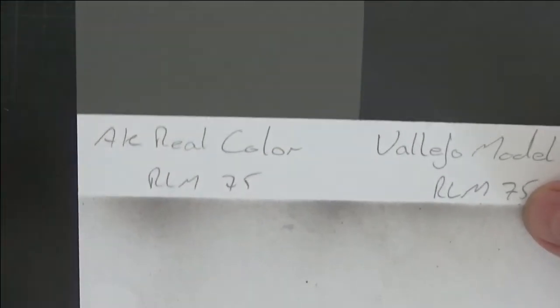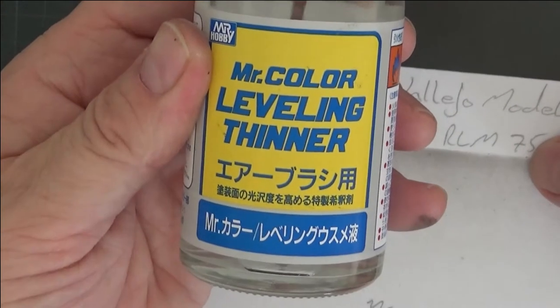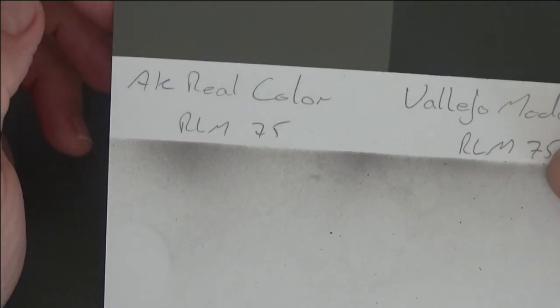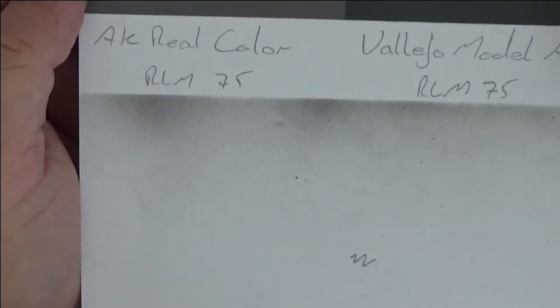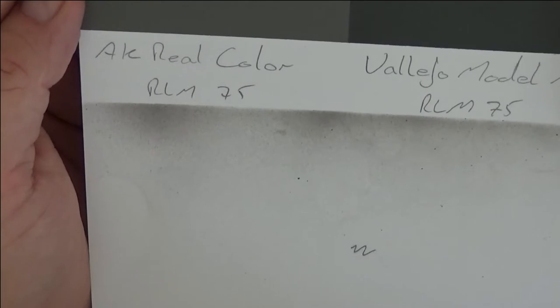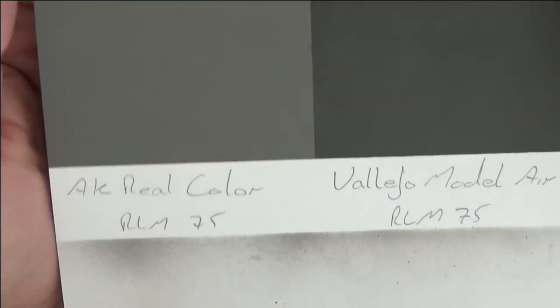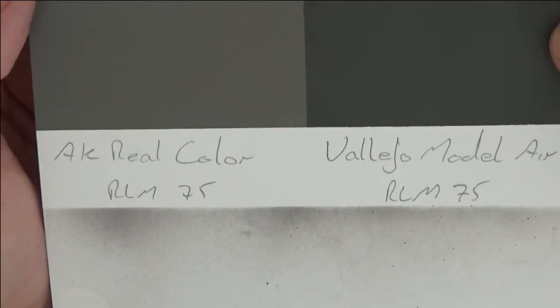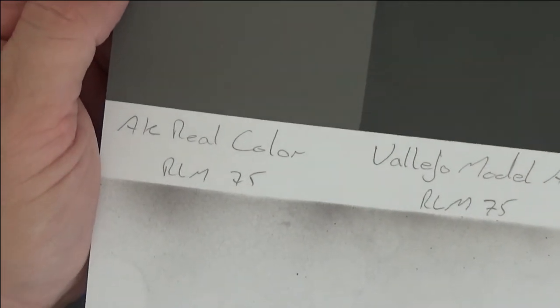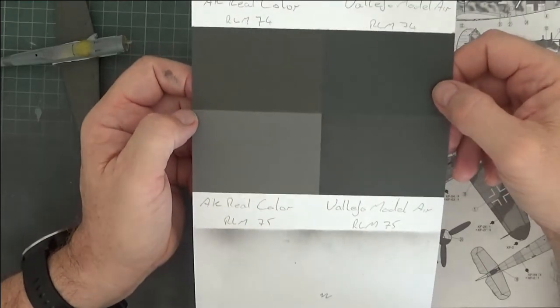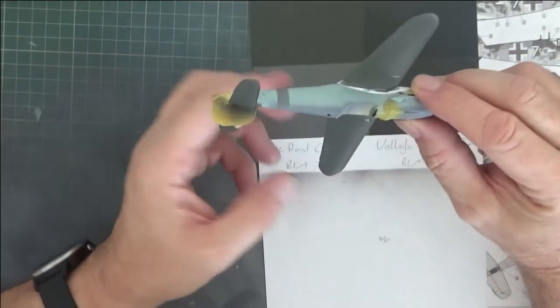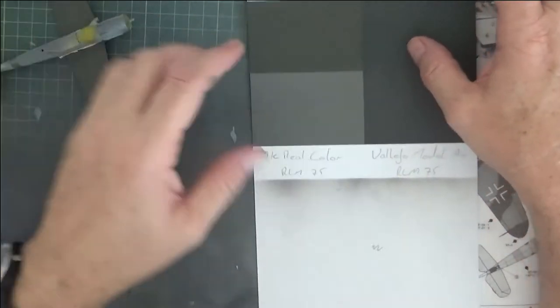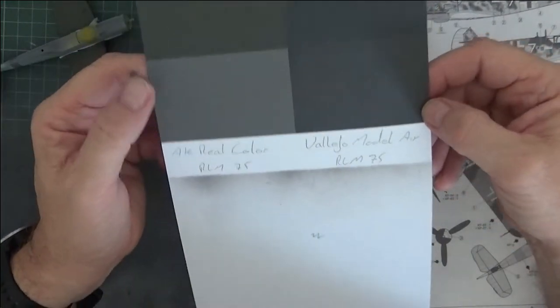For the test, I tried to get them both to the same consistency. I put a few drops of Mr. Color leveling thinner in for the real colors. And then for the Vallejo colors, I just used Ultimate Products Airbrush thinner, which I find is pretty good, works with all acrylics. You can see there's a bit of bleed under there because I think I diluted the Vallejo colors a bit too much, and I was trying to hurry this before I have to go out.